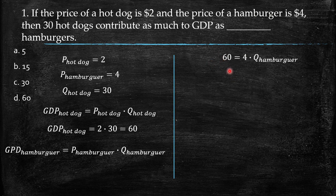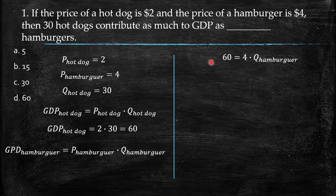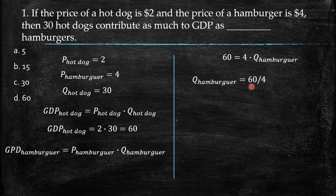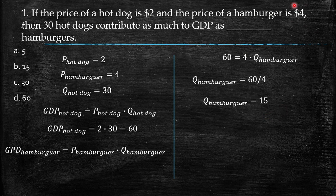We set 60 equal to four times the quantity of hamburgers, so the quantity of hamburgers equals 60 over four, which is 15. The contribution of 30 hot dogs is exactly the same as the contribution of 15 hamburgers, because hamburgers are double the value of hot dogs, so you only need half the quantity.